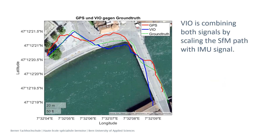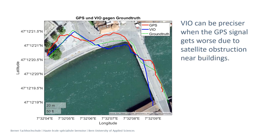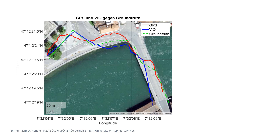VIO combines both signals by scaling the SfM path with the IMU signal. VIO can be more precise when the GPS signal degrades due to satellite obstruction near buildings.